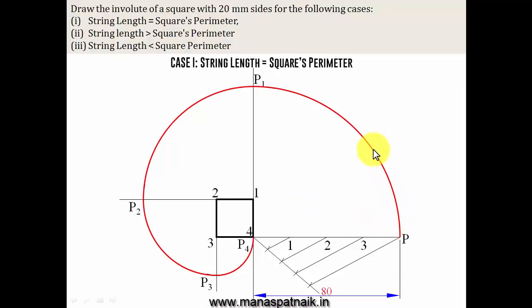And if you watch carefully, the best way to draw this is, we have to draw this arc, and for this arc, you have to take this 4 as the center. For making this arc, take this 1 as the center. For making this arc, take this 2 as the center, and for this final arc, take this 3 as the center. All of this can be accomplished with the simple help of a compass. So, guys, that was all about case 1, when the string length was equal to the square's perimeter.